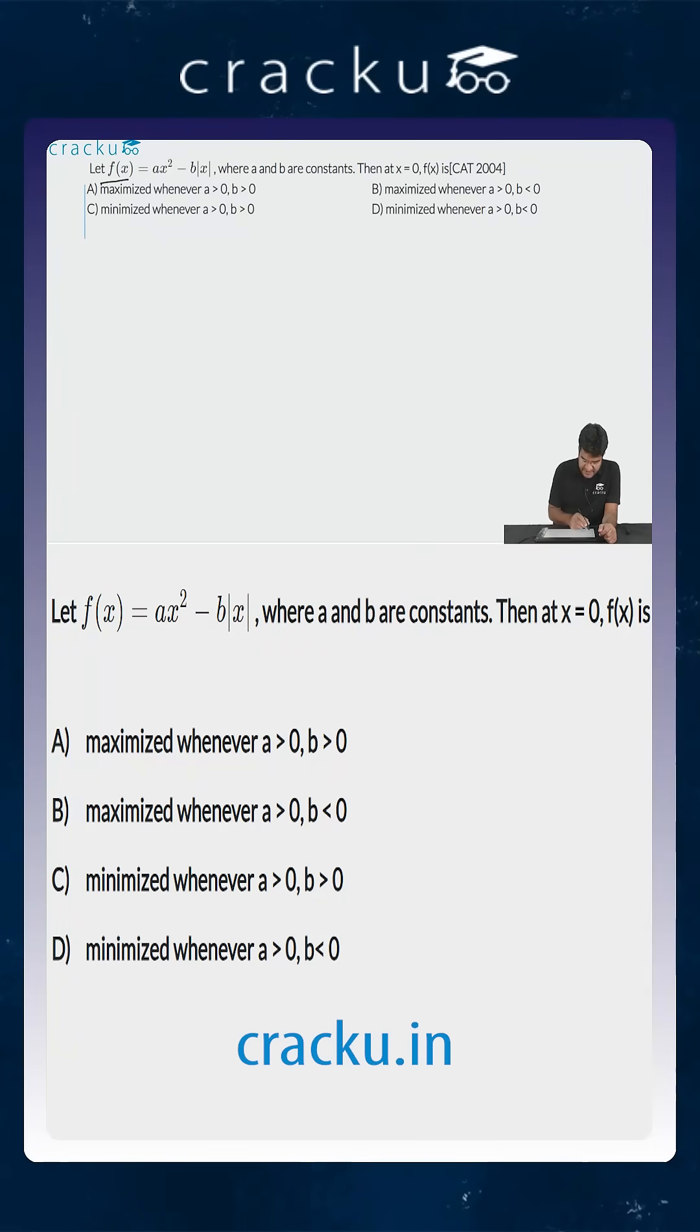In this question we are given f(x) equals ax² minus b times the modulus of x, where a and b are constants. Then we need to find out at x equals 0, whether f(x) is maximized or minimized when a is greater than 0, or there are different options that are given.